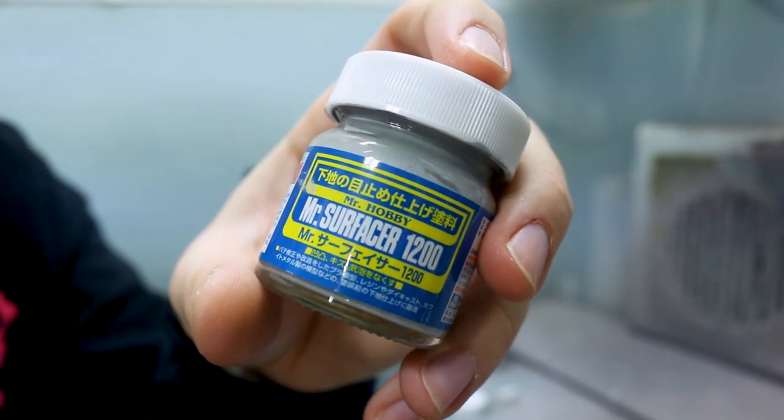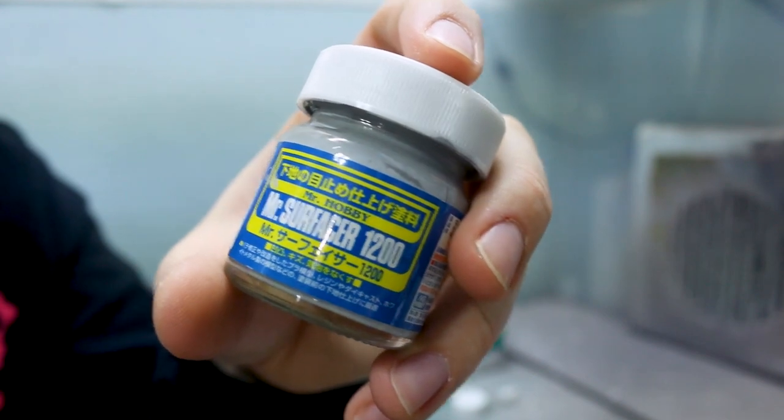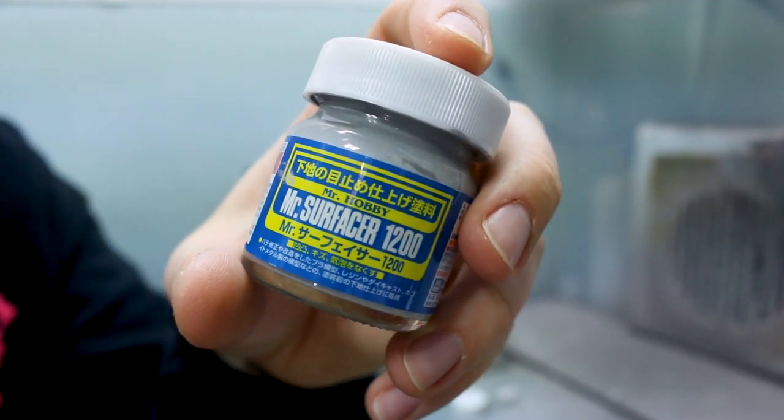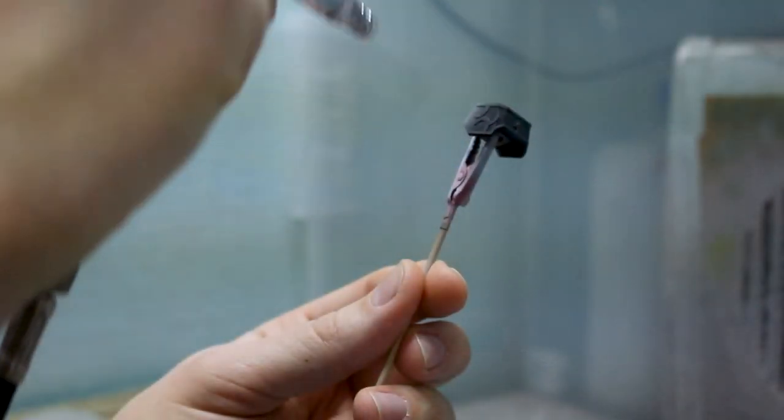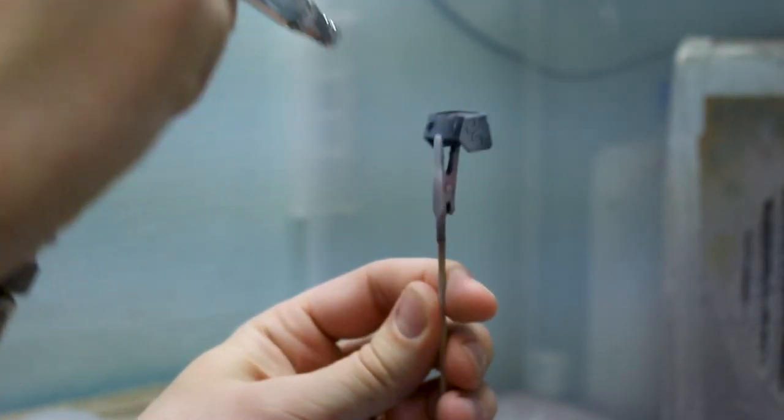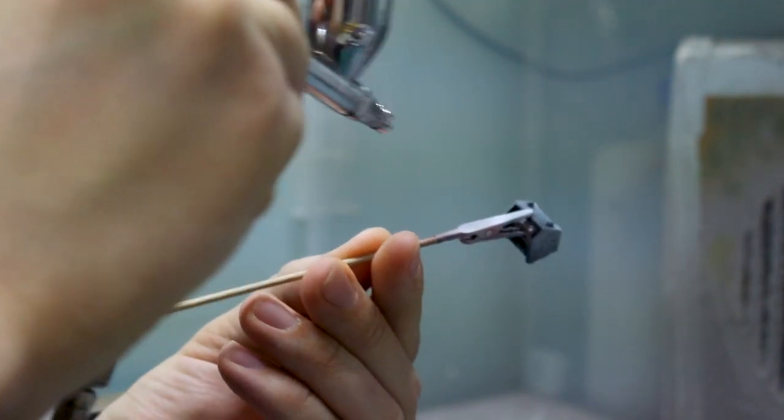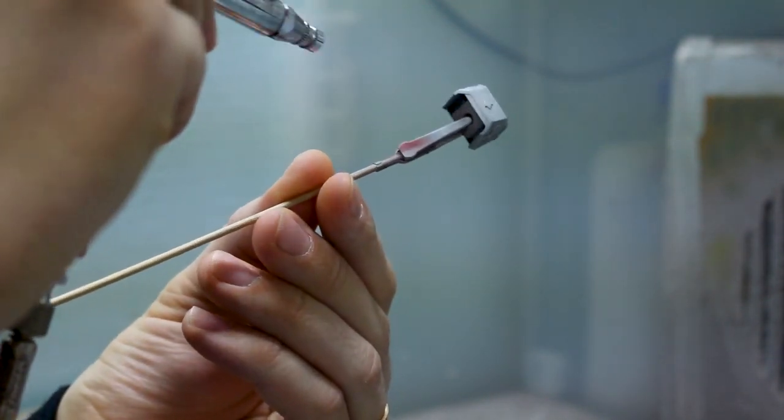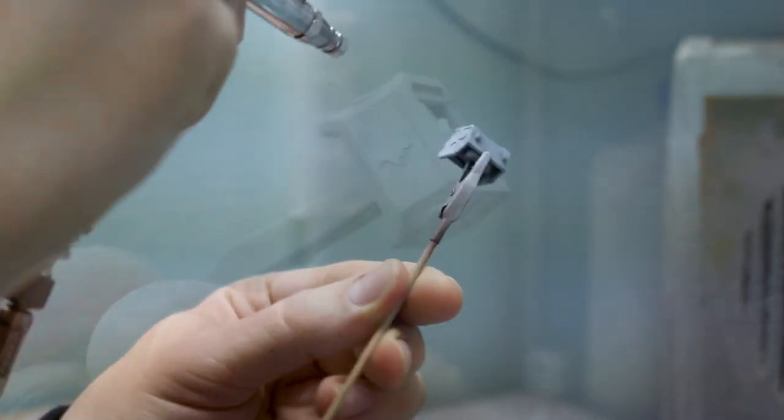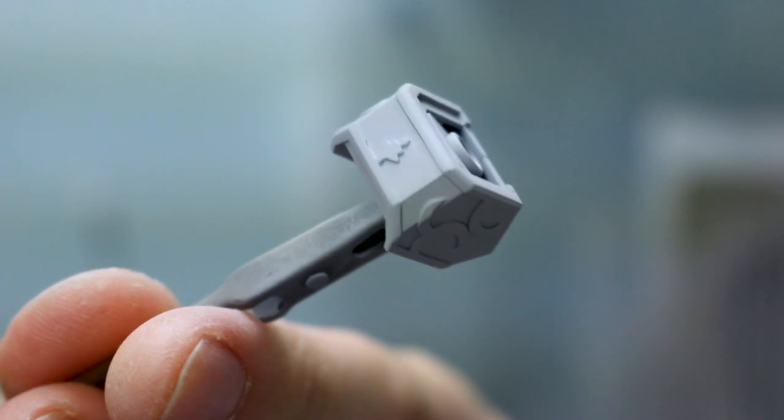So for the primer, I'm going to be using Mr. Surfacer 1200. It doesn't really matter what primer you use. If you aren't using an airbrush, you can also use just spray can primer for this instead.